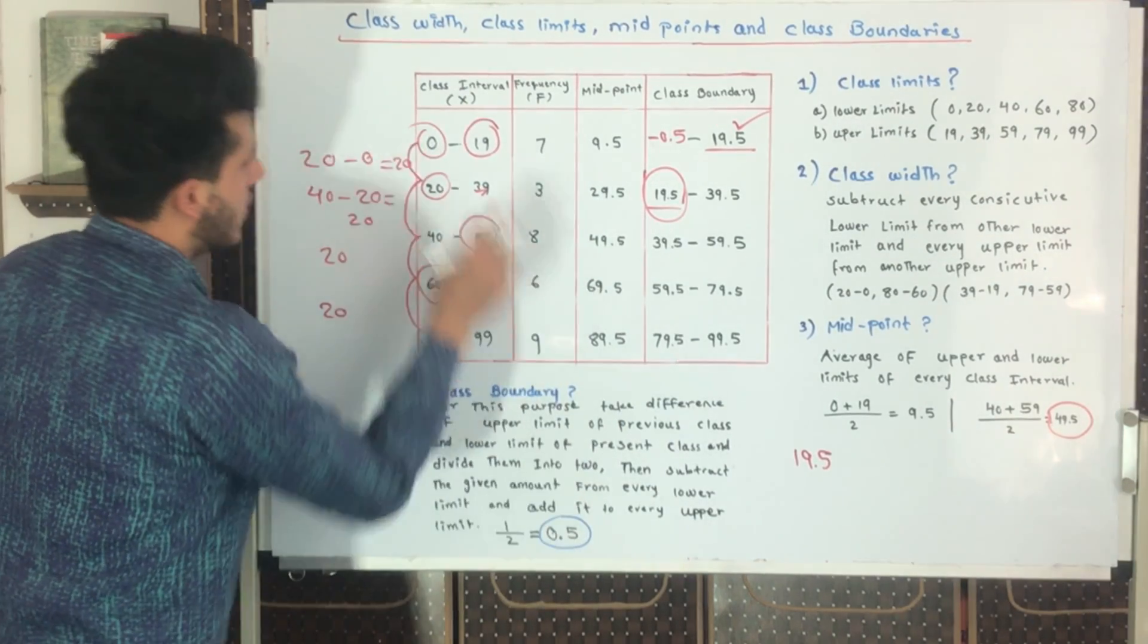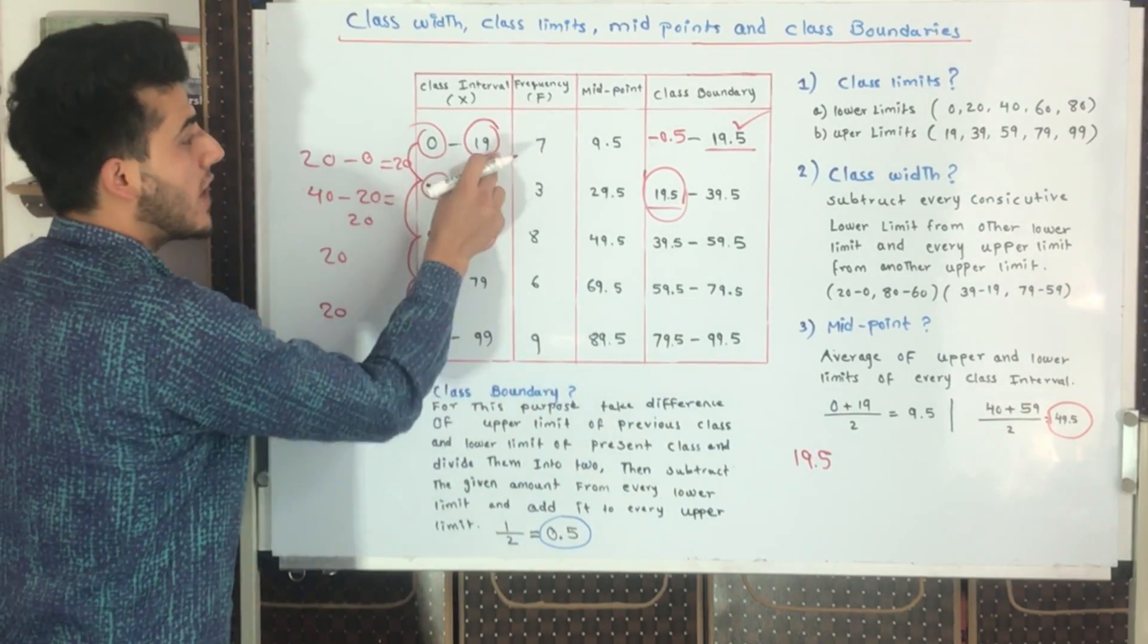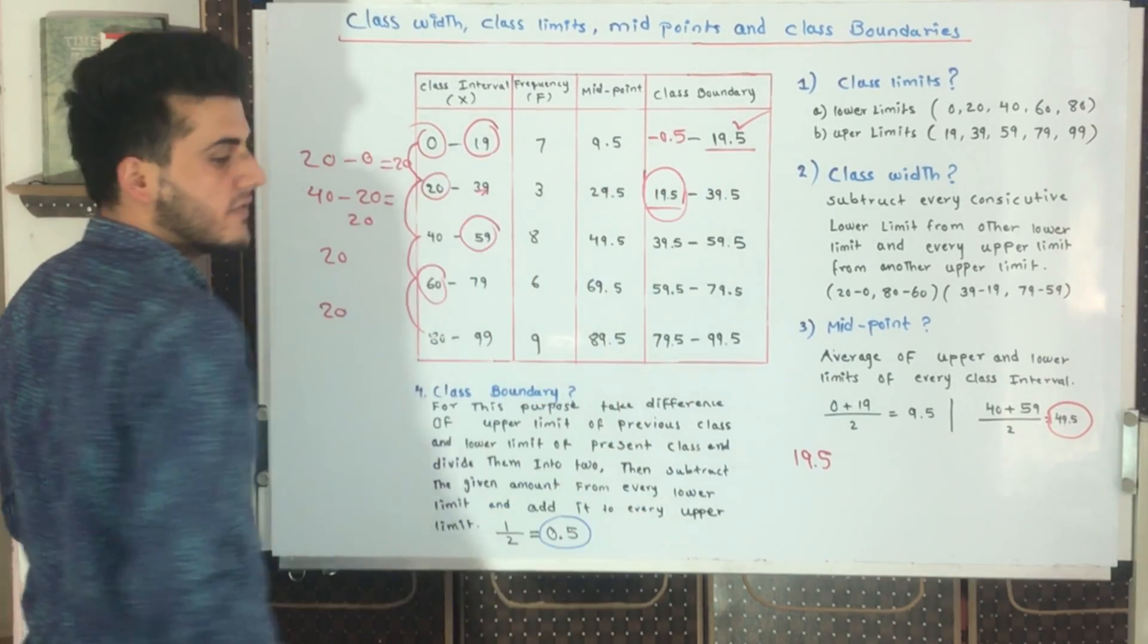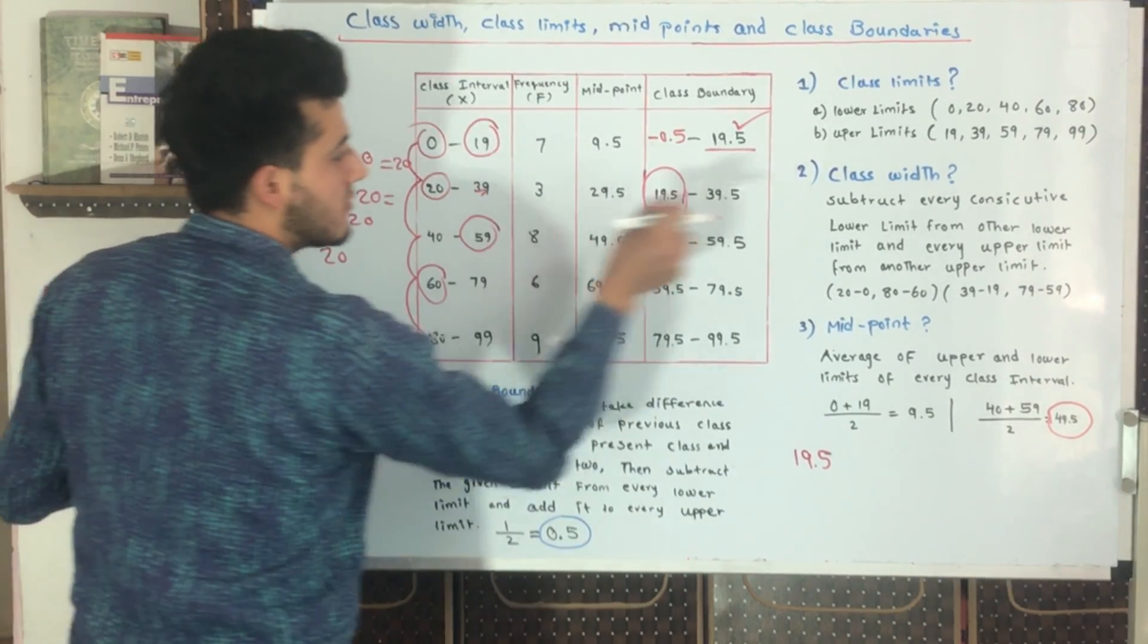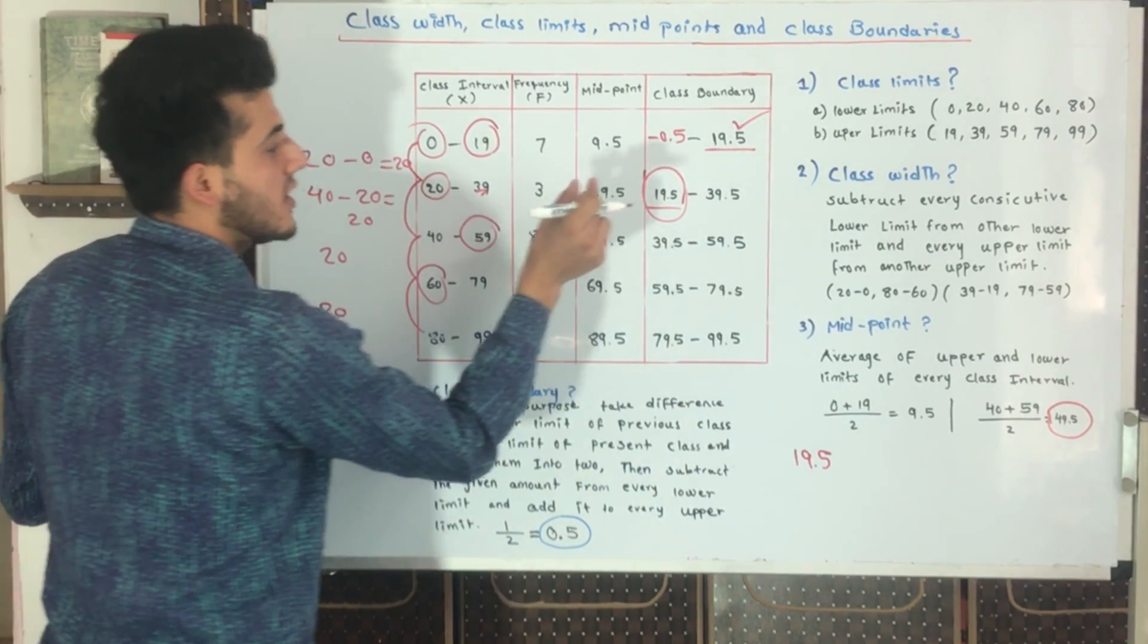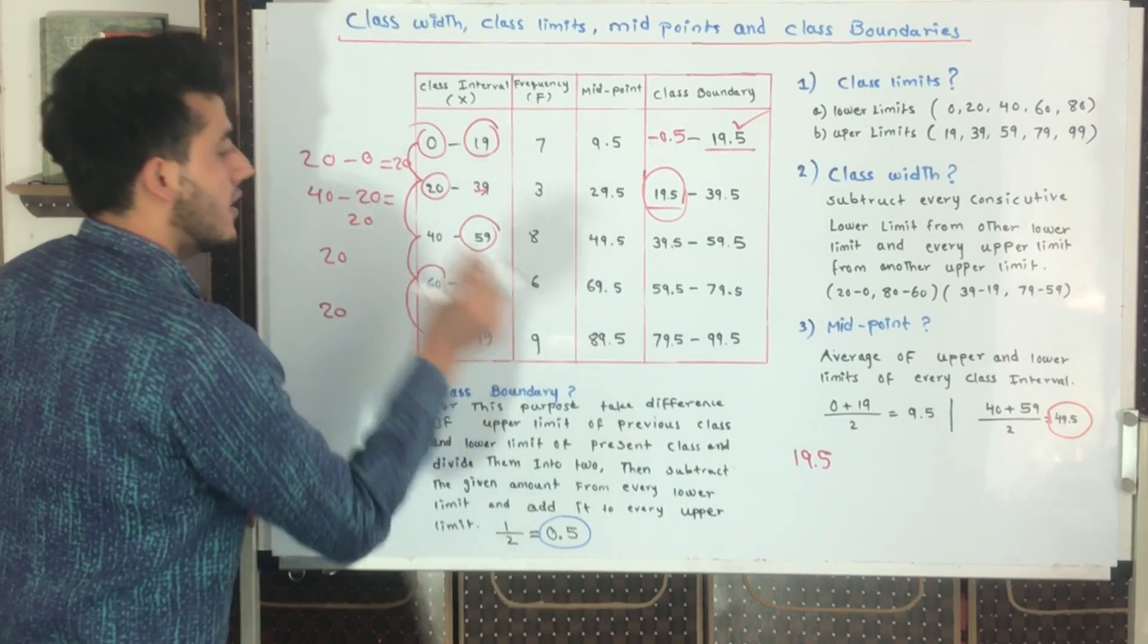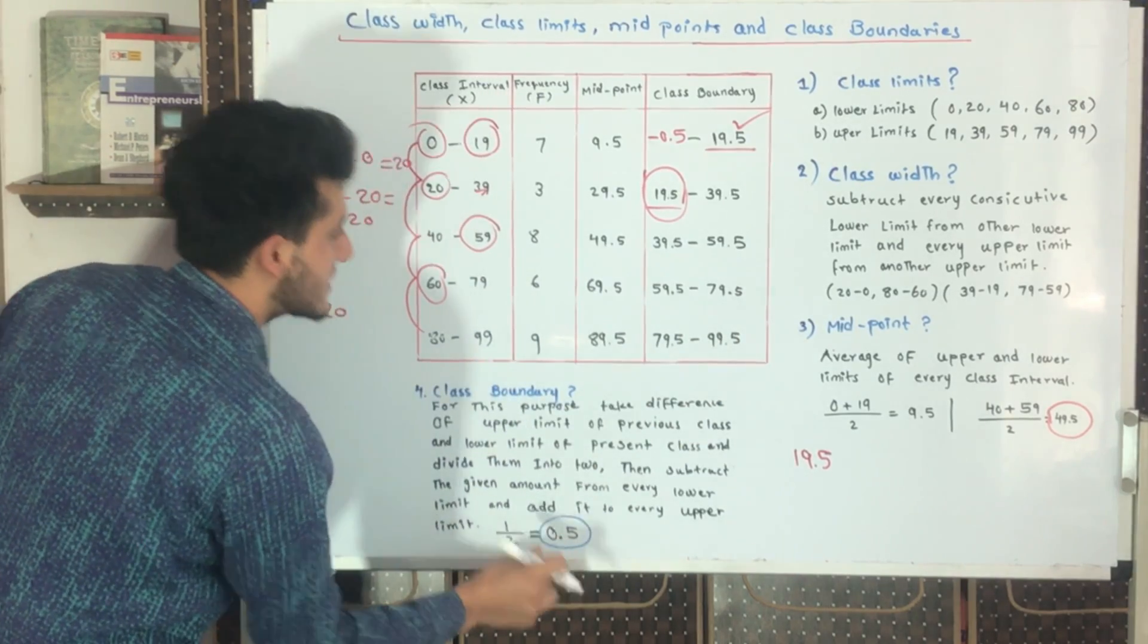If we add 0.5 to 19, it becomes 19.5. If we subtract 0.5 from 0, it becomes -0.5. If we add 0.5 to 39, it becomes 39.5. If we subtract it from 20, it becomes 19.5. In the same way, if we add 0.5 to 59, it becomes 59.5, and if we subtract 0.5 from 40, it becomes 39.5.